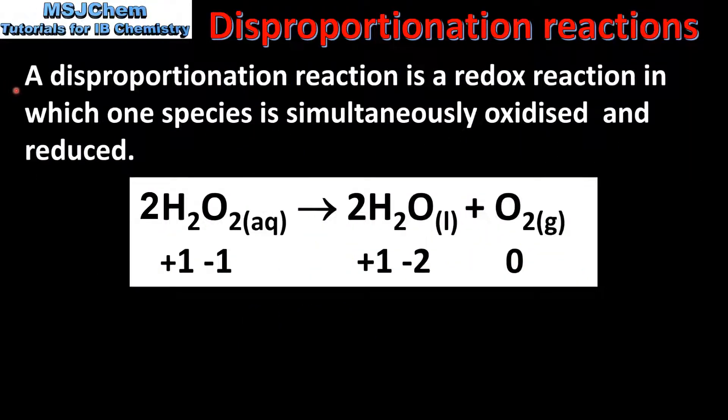A disproportionation reaction is a redox reaction in which one species is simultaneously oxidized and reduced. That is, one species acts as both an oxidizing agent and a reducing agent.